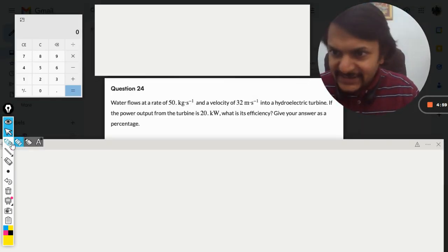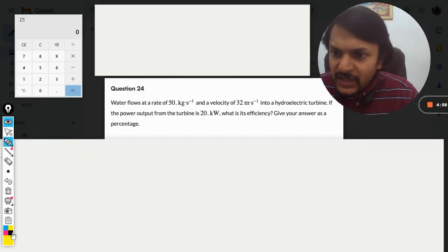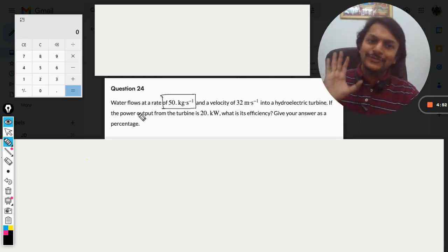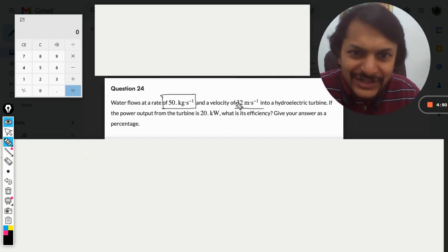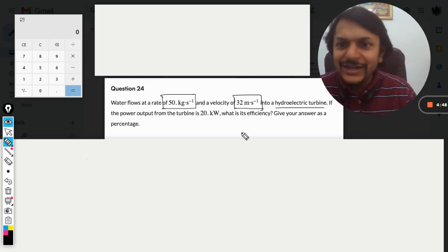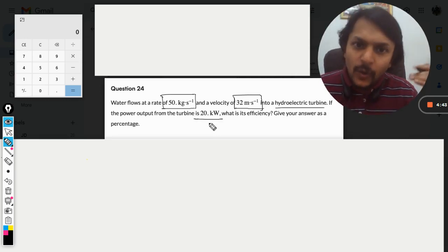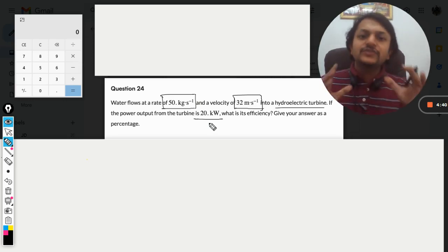Okay, dear students, let us see what is in this question. Water flows at the rate of 50 kilograms per second at a velocity of 32 meters per second into a hydroelectric turbine. If the power output of the turbine is 20 kilowatt, what is its efficiency?